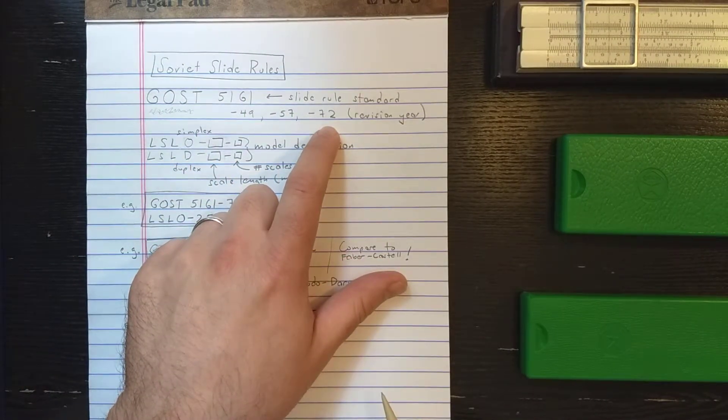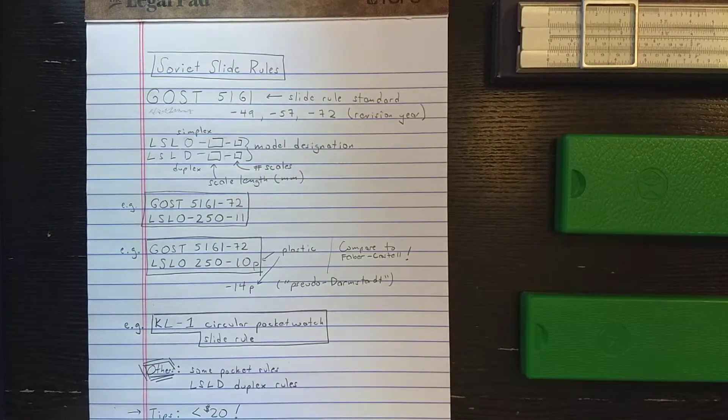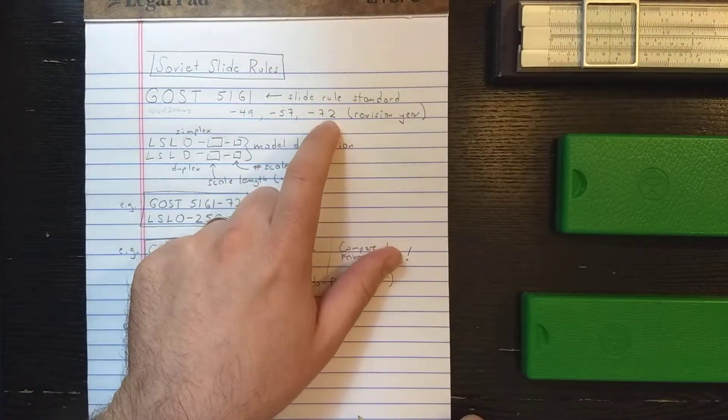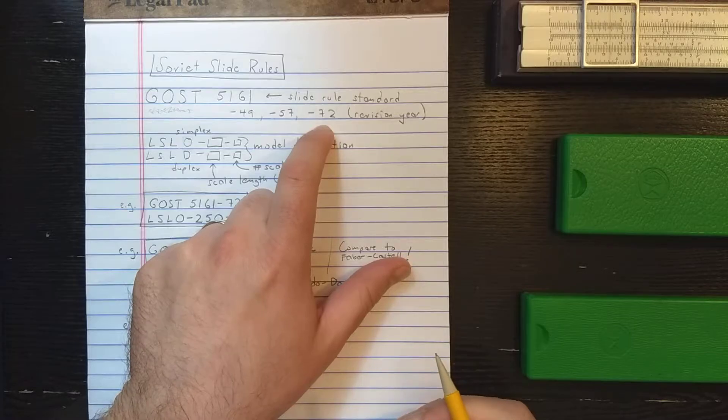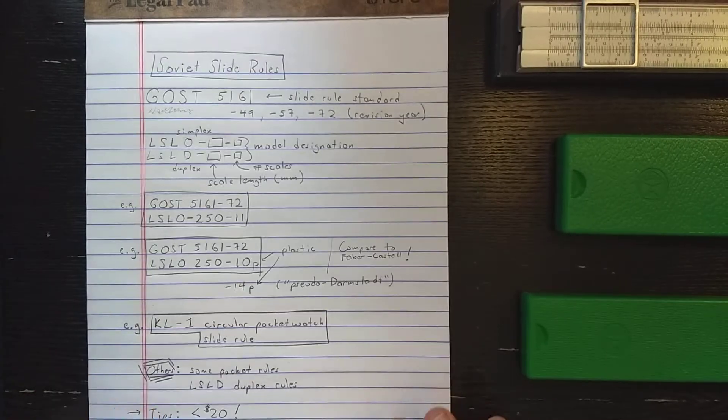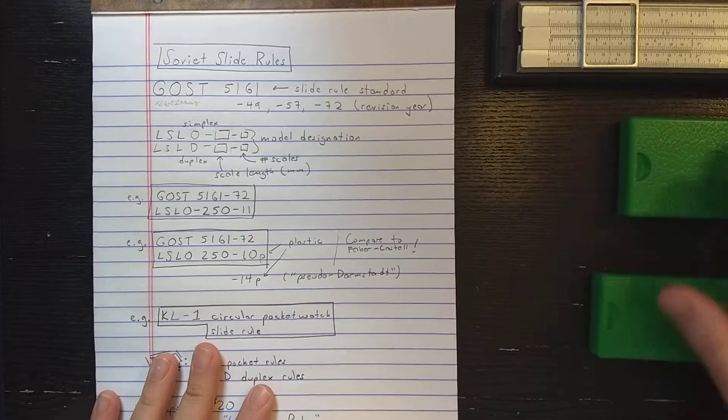There are revision years greater than 72, I think. There are definitely slide rules made after 72, which make some of these some of the newest slide rules you can buy. So let's look at some examples.